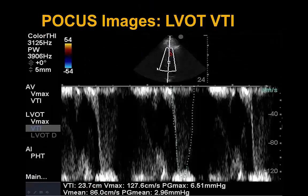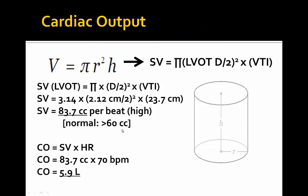For LVOT calculations, we measure an LVOT diameter of 2.12 centimeters. At the level of the LVOT just before the aortic valve, we get a VTI of 23.7 centimeters, which is greater than the normal 18–20, with a max gradient of 6.5 and a mean gradient of 3 mmHg. Plugging into the cardiac output calculation, we get a stroke volume of 84 cc per beat, and a cardiac output of approximately 5.9 liters per minute at a heart rate of 70.